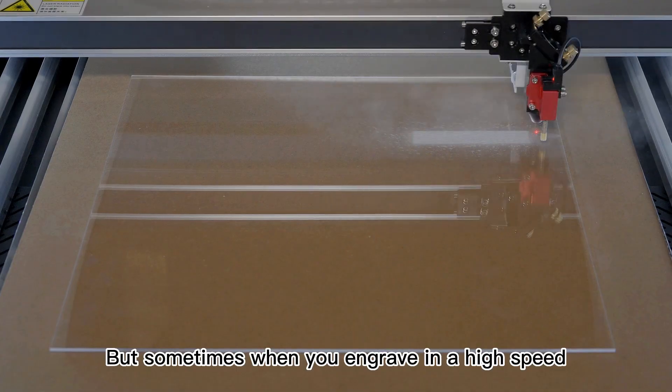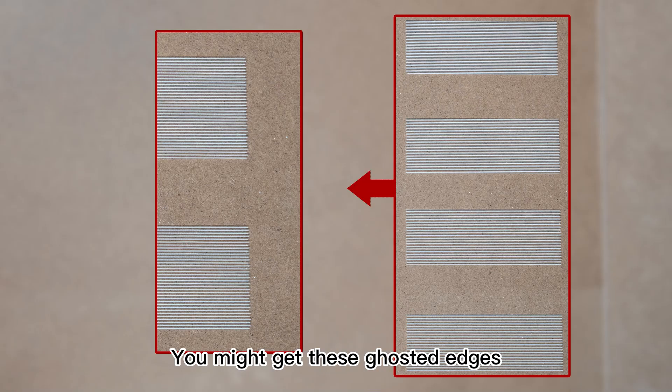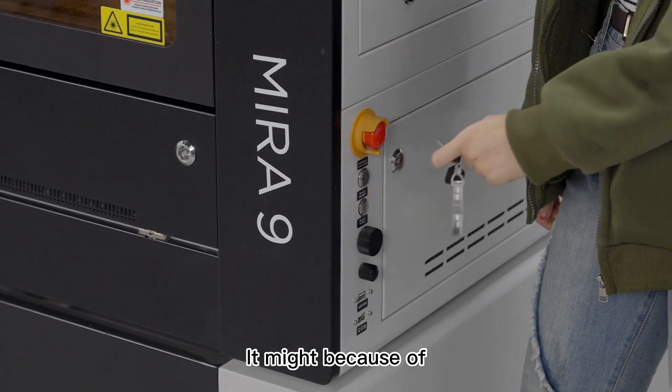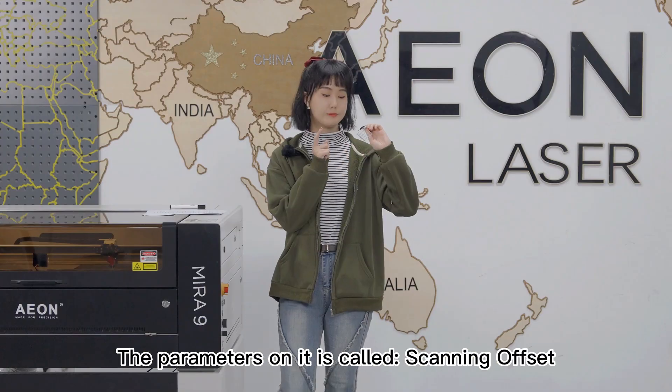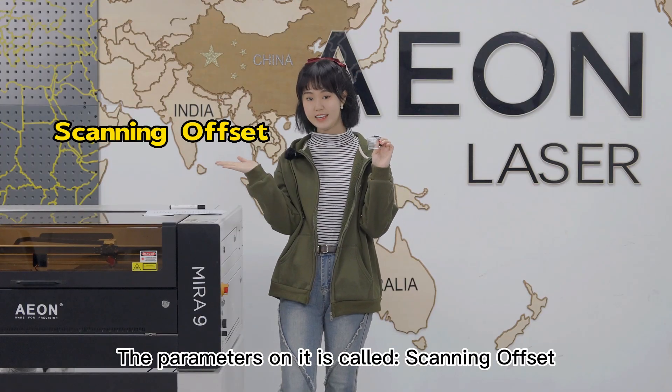But sometimes when you engrave at high speed, you might get these ghosted edges. It might be because you didn't apply the parameters from this acrylic cube. The parameters on it are called scanning offset.